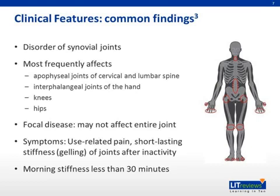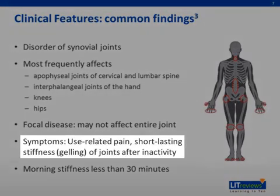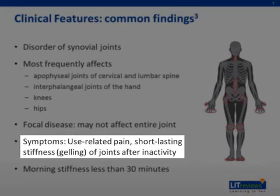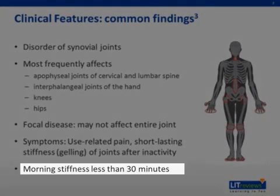In OA, the first carpal joint at the base of the thumb is commonly involved. Cardinal features of OA are use-related pain and a short-lasting stiffness, or gelling of the joints after inactivity. For example, a patient with OA may feel joint pain or stiffness after a short car ride or while waiting to be seen in the doctor's office. Commonly, patients are stiff in the morning, but the duration is far less than 30 minutes. In comparison, patients with RA will often have an hour or more of stiffness that improves with light activity, hot showers, or medication.